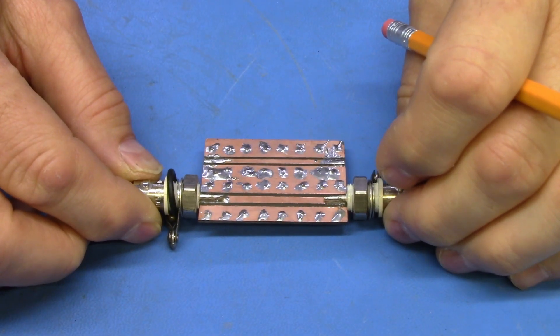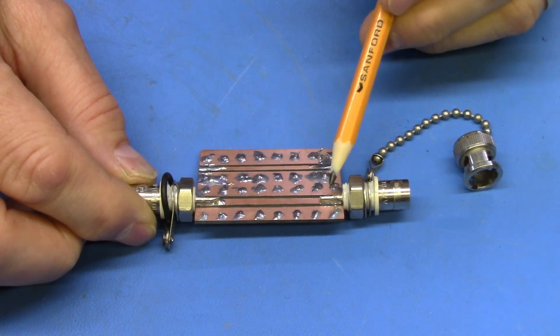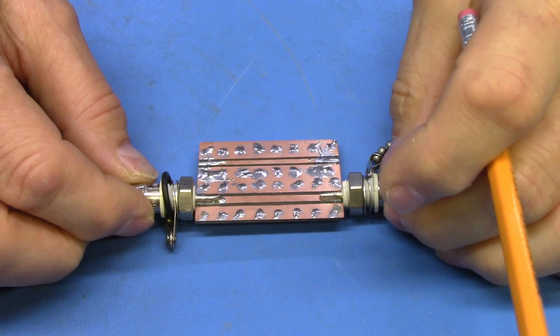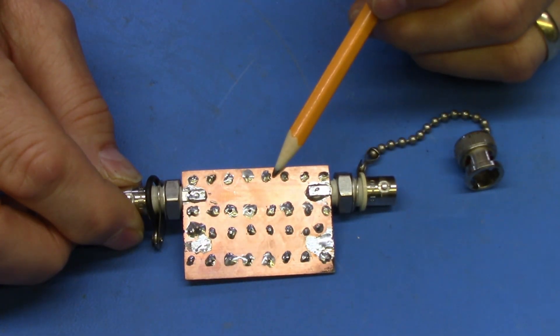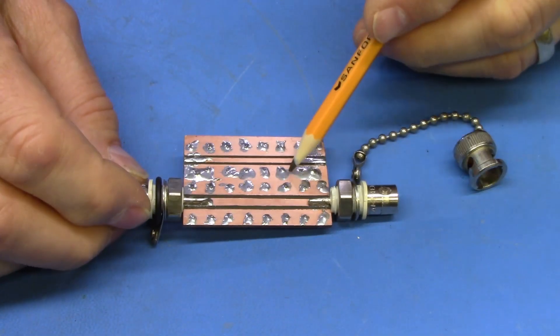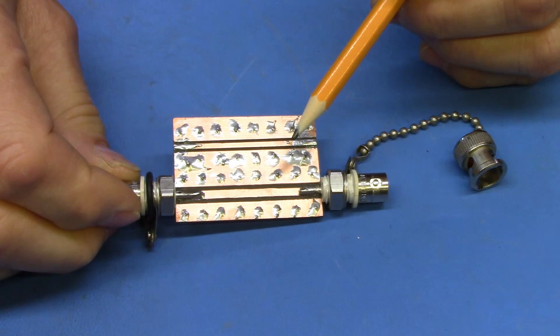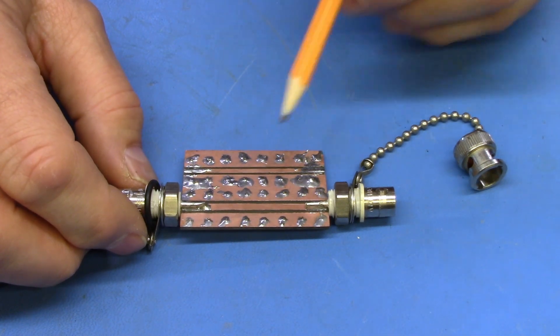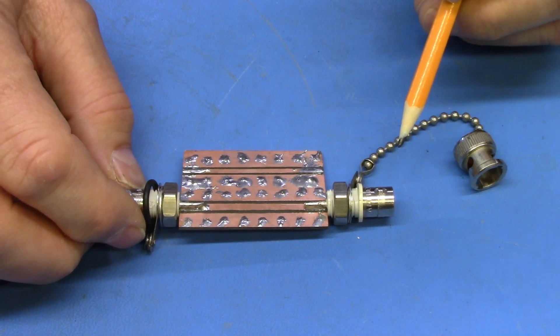Here is my attempt at a coplanar waveguide with ground configuration. You can see the signal carrying trace, which runs from connector to connector. You can see the ground plane on either side of the signal carrying trace. If I flip it over, you can see the ground plane on the bottom, just copper everywhere. But, what are all these solder bumps that you see all over the place? Well, the ground plane on the top and the ground plane on the bottom have to be at the same potential all over for this to work right.